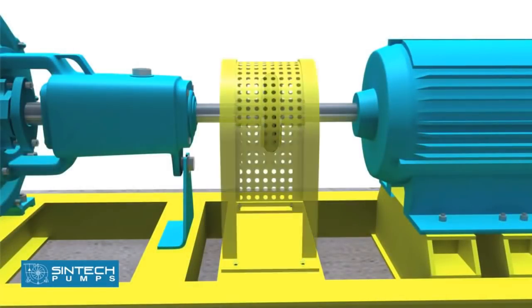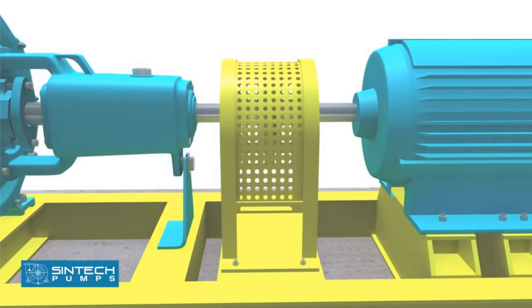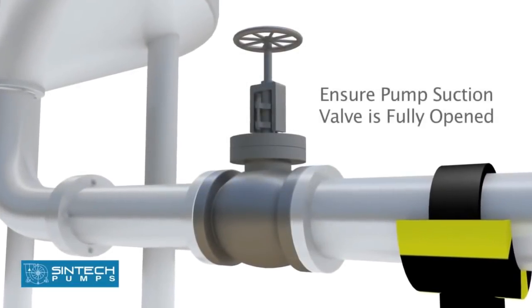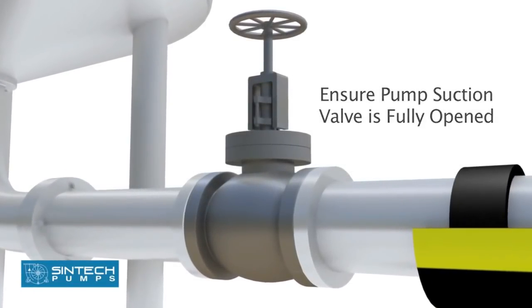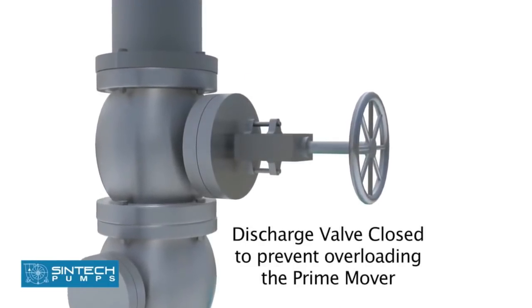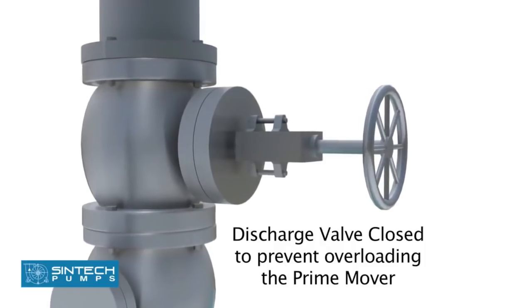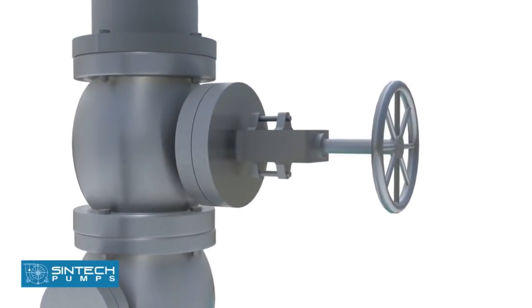Place the coupling guard and tighten the bolts. Ensure that pump suction valve is fully opened and all joints are checked for any leakage. The opening of the discharge valve is kept closed as this prevents overloading the prime mover.